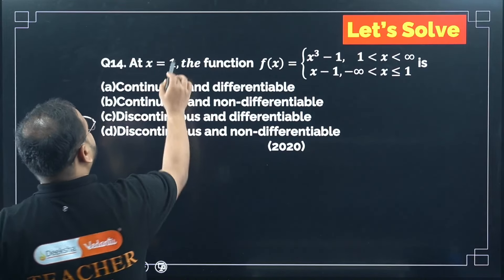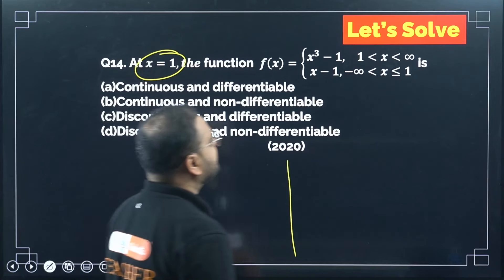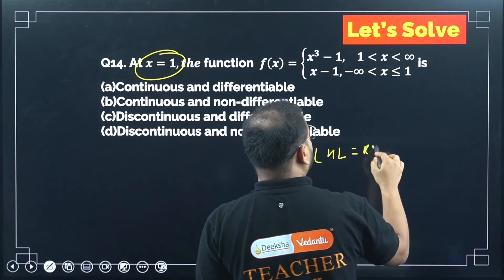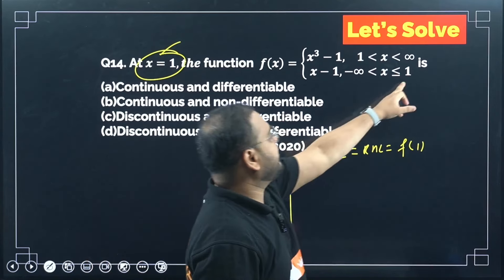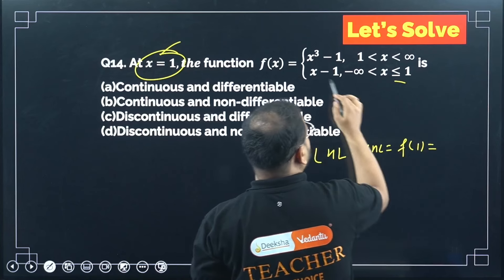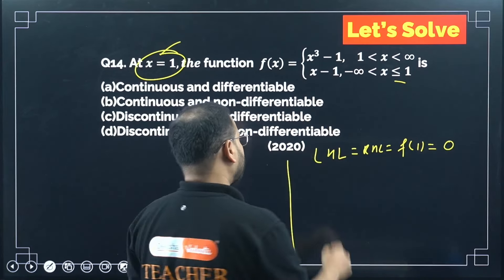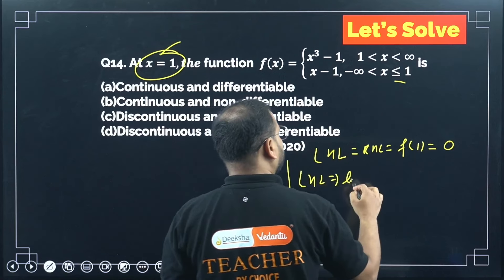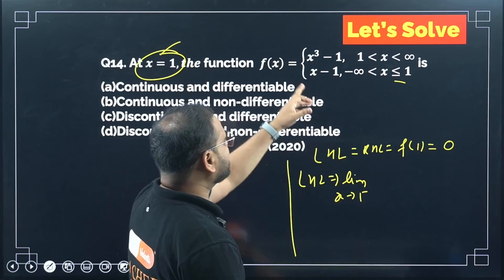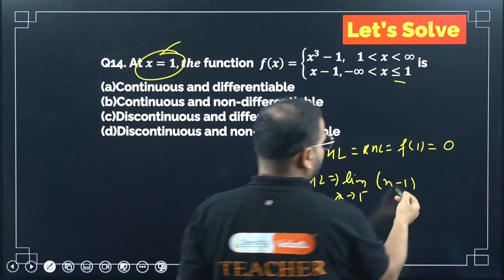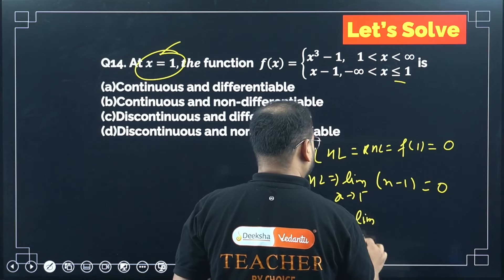Question 14: Check whether the given function is continuous and differentiable at a point. For continuity: find LHL = RHL = f(1). f(1) = 1−1 = 0. For the LHL, since there is no indeterminate form, we can directly substitute.